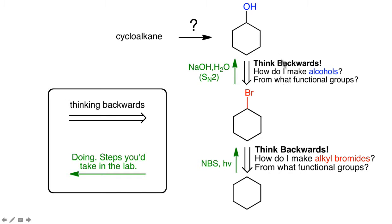At this point, you might be thinking: this seems kind of silly. If I want to make cyclohexanol and I know that I have to start with a cycloalkane, I could have figured out the starting material on my own. It's obvious I start with cyclohexane, and then through a little trial and error I could have devised a synthesis to get me to cyclohexanol. And that's fine for these small syntheses that are only two or three steps.